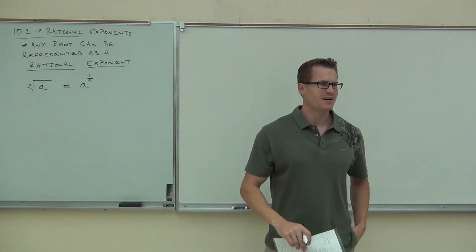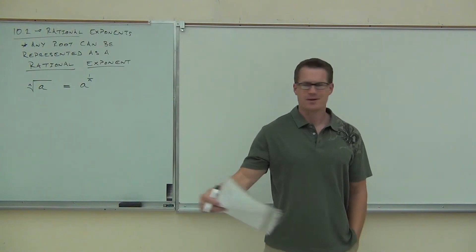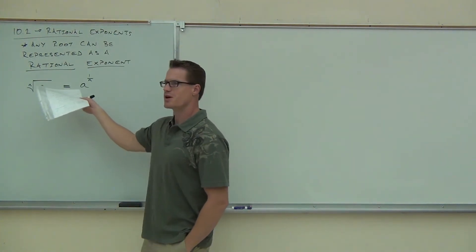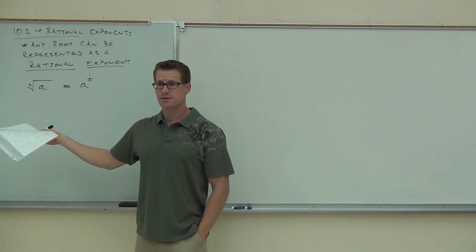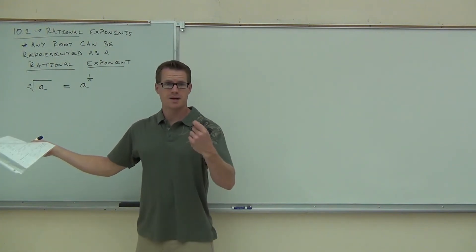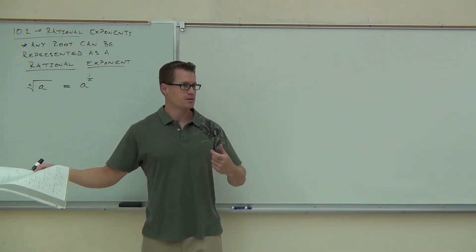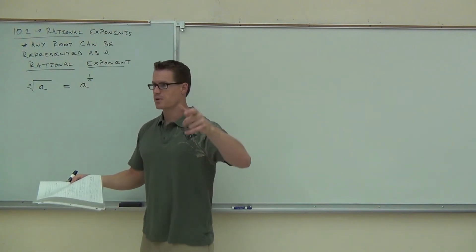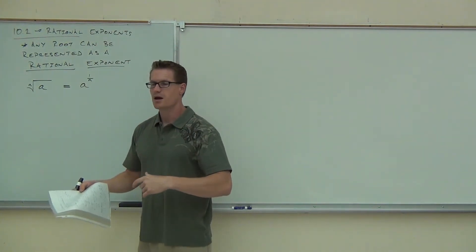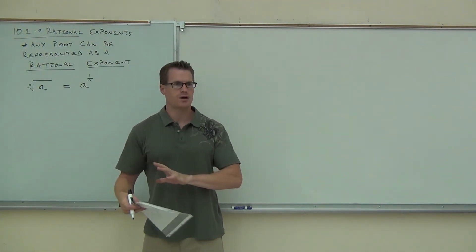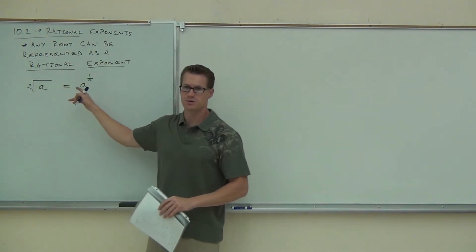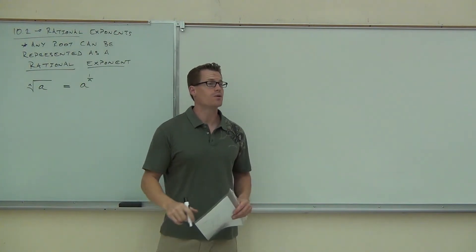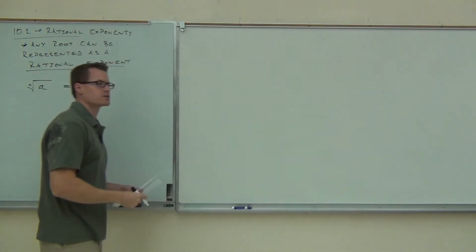Why are we doing that — why are we making roots look like exponents? Well, do you know anything about exponents? If you multiply common bases, you add exponents. If you have an exponent to an exponent, you multiply. If you divide, you subtract. We can do all that stuff with our roots now by translating to a fractional or rational exponent. That's why we're translating these.